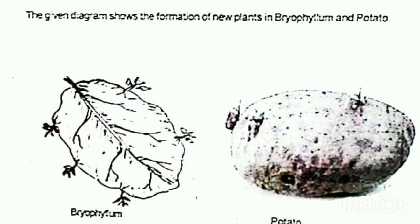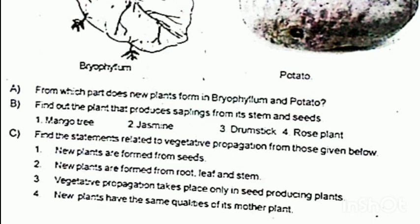The given diagram shows the formation of new plants in Bryophyllum and potato. From which part do new plants form in Bryophyllum and potato? Bryophyllum and potato are also different in this regard.